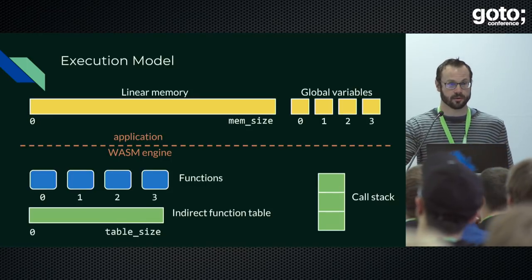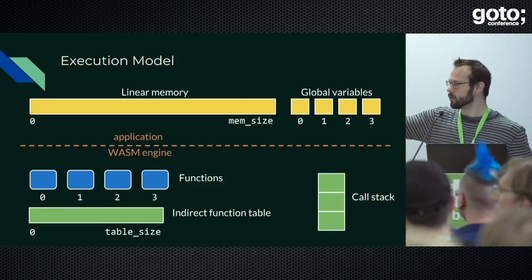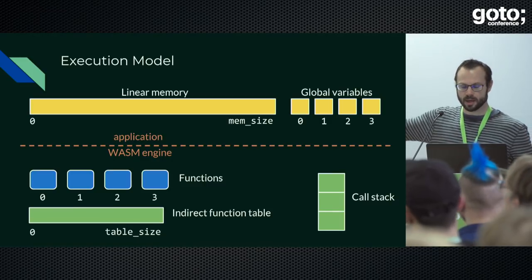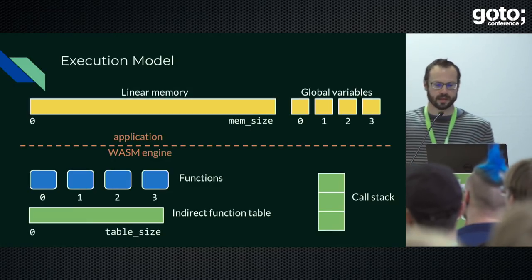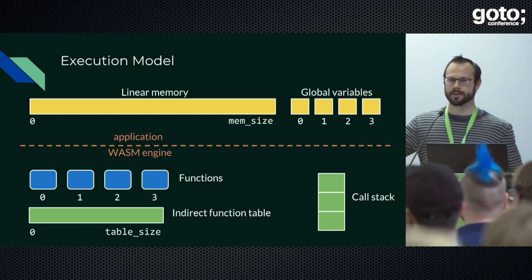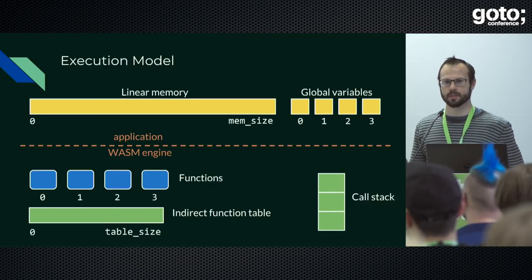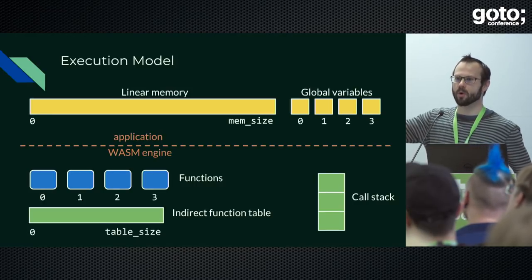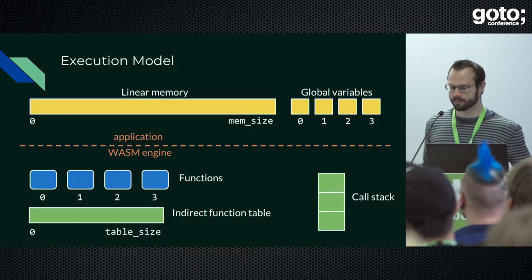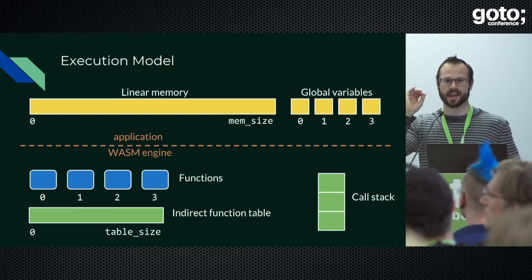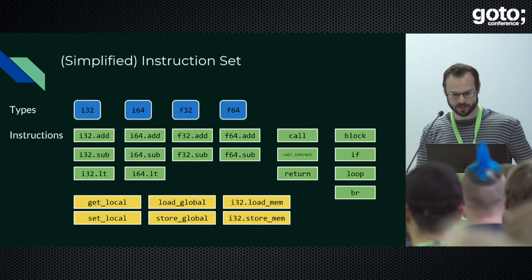Similarly, the indirect function table — which is how we do indirect calls — cannot be corrupted by your program. Function representations inside the WebAssembly engine cannot be accessed, and that's by design. Instead, the state we give you is basically a large byte array — an emulation of a machine. That memory is separated from all the other memory in the process or embedding, so you can't get to the browser state through the linear memory. Global variables cannot be addressed indirectly; you must always specify an index, so you can't corrupt them with an errant pointer.